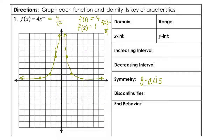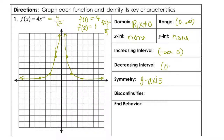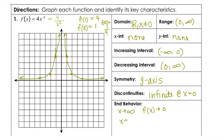For 4/x²: the domain is all real numbers except x ≠ 0. The range is (0, ∞). There are no x- or y-intercepts. Increasing on (−∞, 0), decreasing on (0, ∞). There is an infinite discontinuity at x = 0. End behavior: as x approaches positive infinity, f(x) approaches 0; as x approaches negative infinity, f(x) also approaches 0.